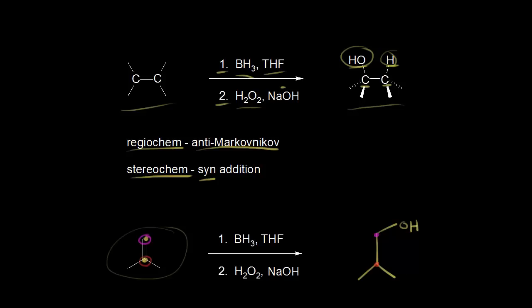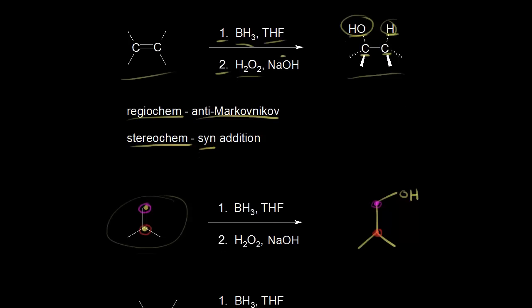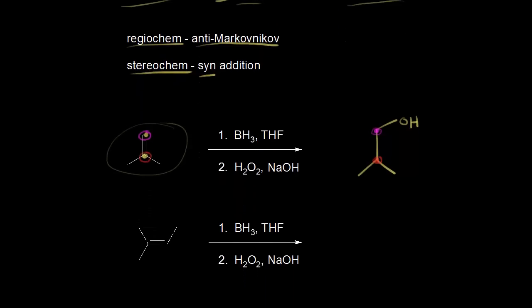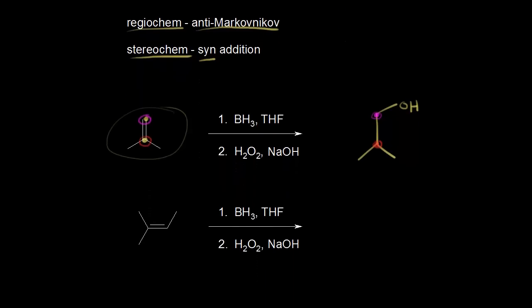We don't really have to worry about stereochemistry for drawing our final product here because the carbon in magenta is not a chiral center, and the carbon in red is also not a chiral center. Let's look at an example where we do have to worry about the stereochemistry when drawing our products.